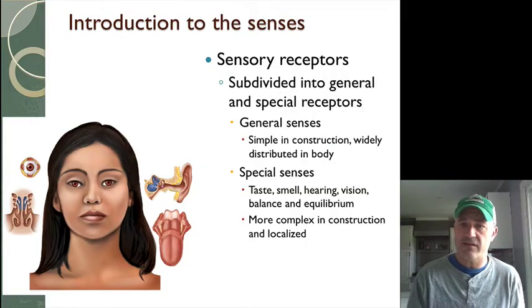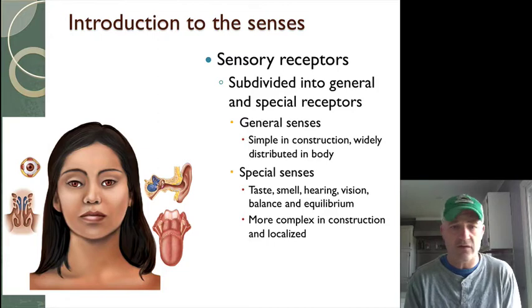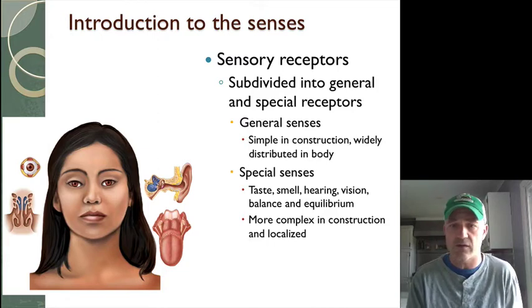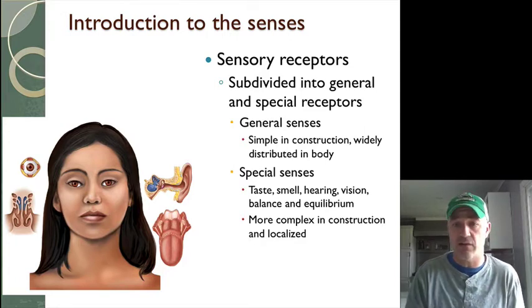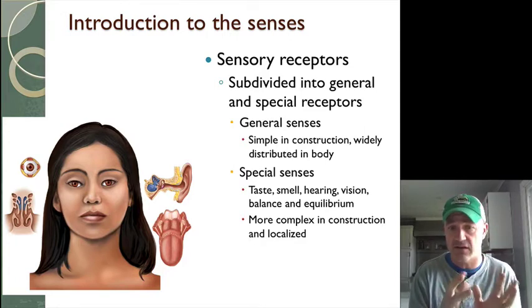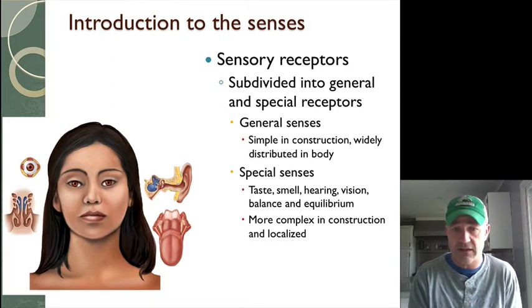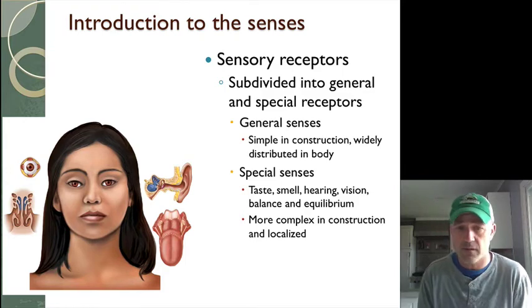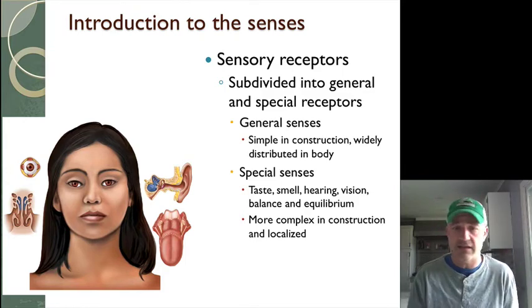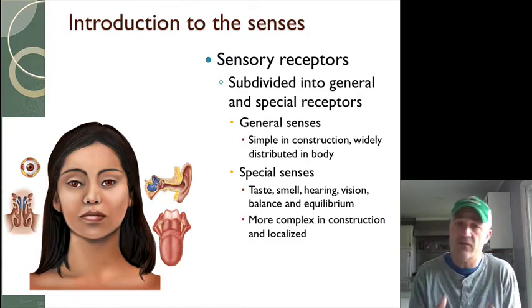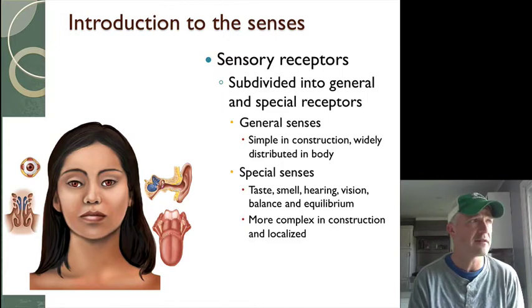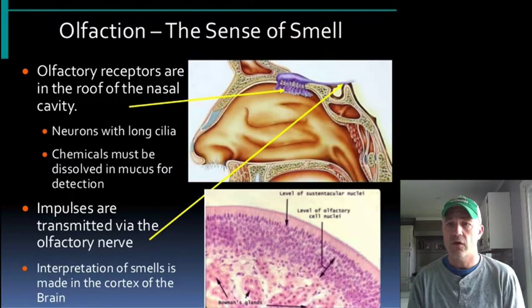Senses are subdivided into general senses, which are found throughout the body, and special senses, which have a specialized organ that specifically handles that sense. With taste, they're all found on the tongue or related oral cavity structures. The ear structures are all found in the inner ear with the cochlea. The sense of sight is found only in the eye, and smell is found in the nasal cavity.